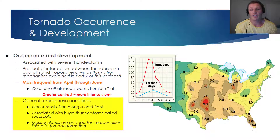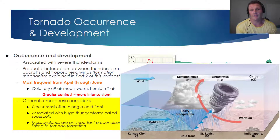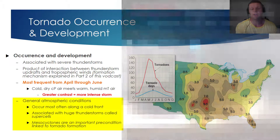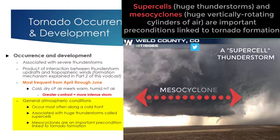Regarding the general atmospheric conditions for tornadoes, they occur most often along a cold front, which is very often associated with a mid-latitude cyclone. Tornadoes are also associated with huge thunderstorms called supercells. Although scientists are still trying to fully understand the tornado formation mechanism, one very important precondition is the presence of a mesocyclone. On the screen, you can see a picture of a tornado that developed the very day this vodcast was filmed — a tornado that occurred in Colorado — and the mesocyclone is the huge cylinder of rotating air visible above the tornado.